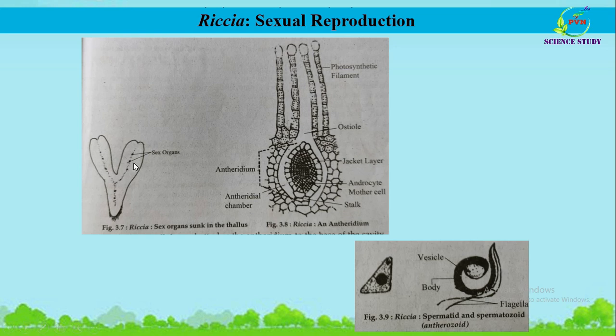Both sex organs are formed singly on the dorsal surface and are deeply sunken in the middle groove of the thallus. They are enclosed in their respective cavities due to the vigorous growth of surrounding vegetative tissue. In monoecious species, the antheridia are formed before the archegonia, and this condition is known as proterandry. This proterandrous condition helps Riccia to avoid self-fertilization. Both sex organs are formed in acropetal succession, meaning the younger ones are towards the apex and the older ones are at the base.